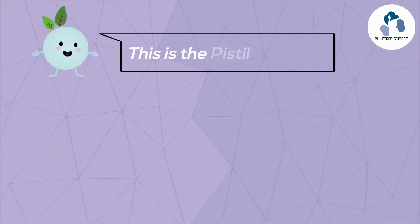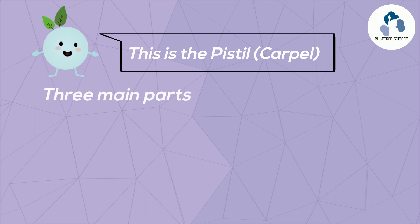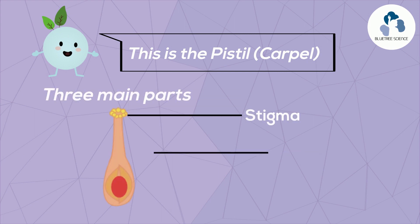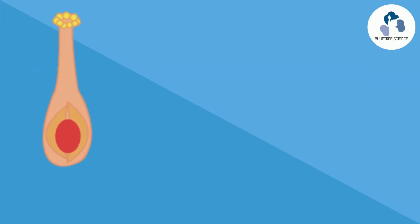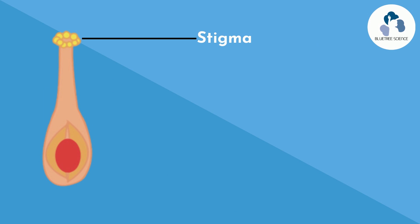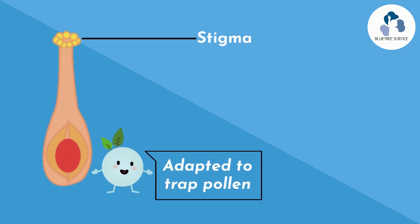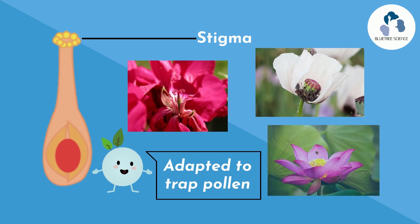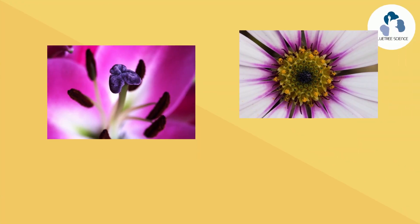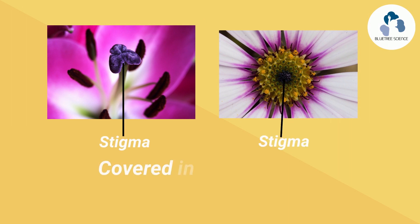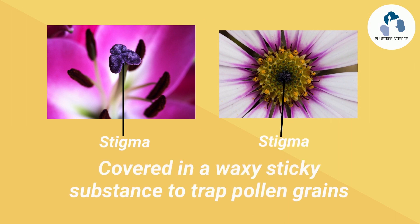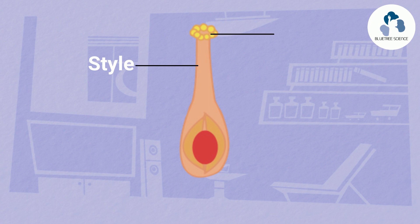The pistil, also known as the carpel, is made up of three main parts: the stigma, the style, and the ovary. The stigma is found at the top of the pistil. It is adapted to trap pollen with hairs, flaps, and other surfaces to increase their efficiency. Most stigmas are covered with a waxy, sticky substance.